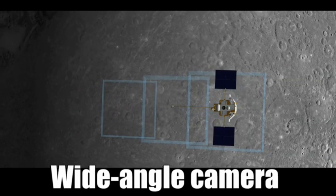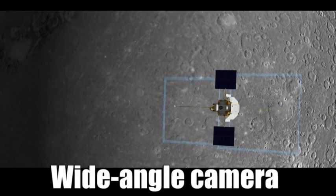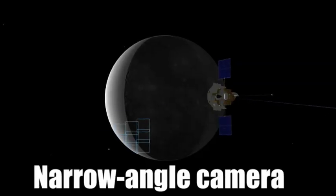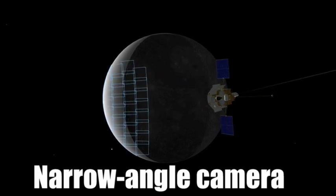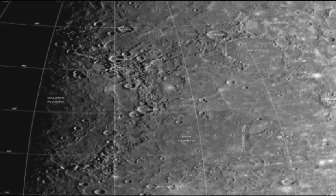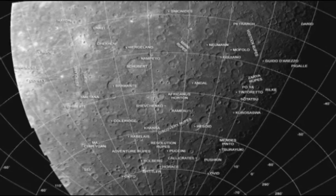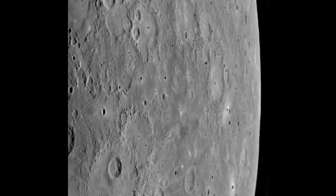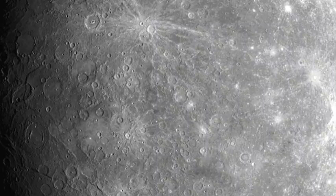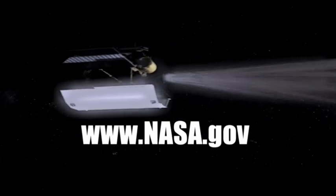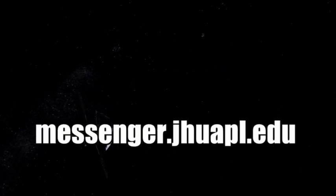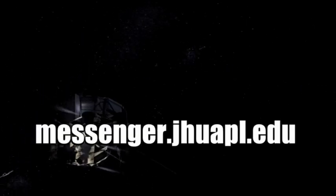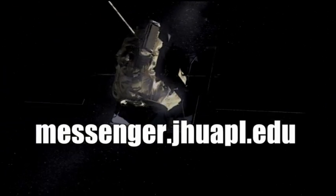The wide angle camera can observe Mercury through 11 different filters. The narrow angle camera takes high resolution black and white images, allowing for extremely detailed analysis of features as small as 18 meters across. You can see thousands of those amazing photos and follow Messenger by visiting www.nasa.gov and also at messenger.jhuapl.edu.